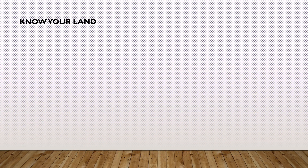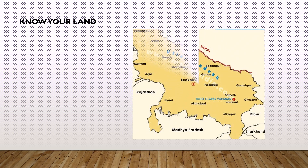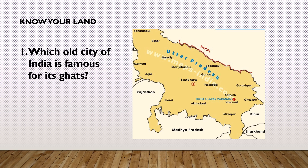Know your land. This is the first state we are going to talk about, written there in blue ink. It is Uttar Pradesh, in which we people are living now. Do you know which old city of India is famous for its Ghats and is situated in Uttar Pradesh? That is Varanasi, or we also call it Banaras. Uttar Pradesh is also called the Sugarcane Bowl of India, and the capital is Lucknow.